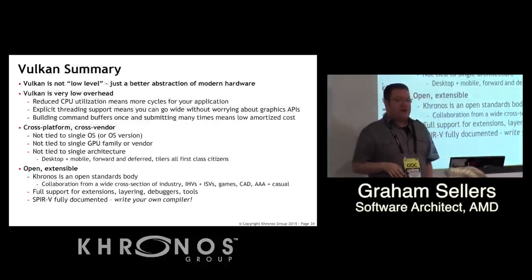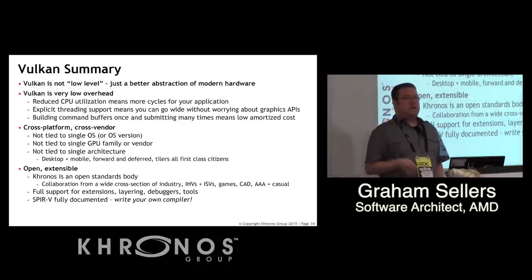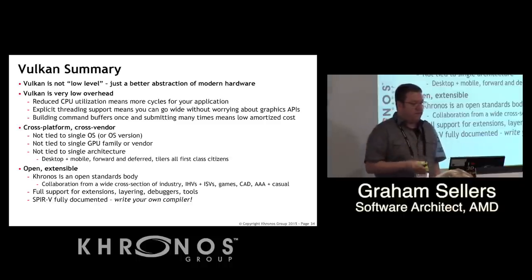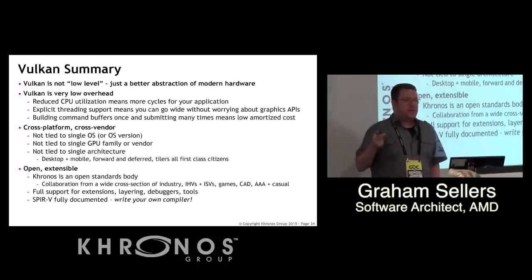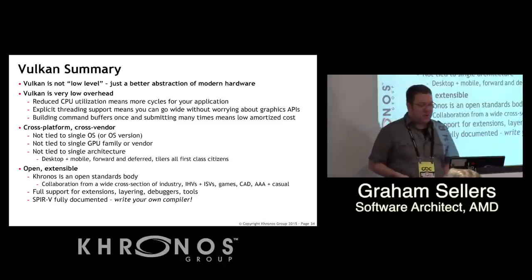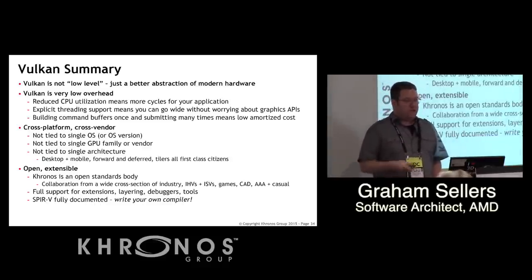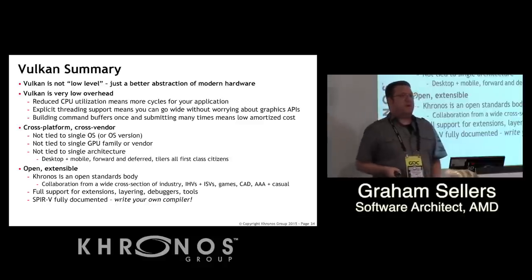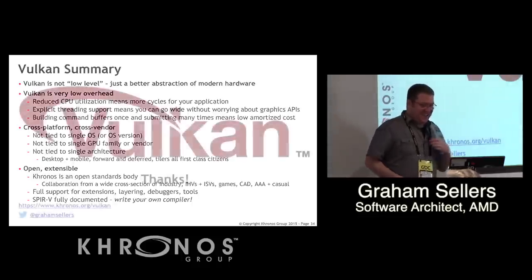In summary, Vulkan is not really a low-level API — it's just a much better abstraction of the hardware we have today. It's very low overhead even if you don't use multiple threads. We're cross-platform and cross-vendor; mobile is a first-class citizen, hence render passes and related features. It's open — Khronos is an open standards body. And SPIR-V: we shouldn't underestimate the massive impact on the compiler ecosystem SPIR-V is going to have. While I've been talking about the Vulkan API, I think the coolest thing is probably SPIR-V, so go write a compiler — it's going to be awesome.